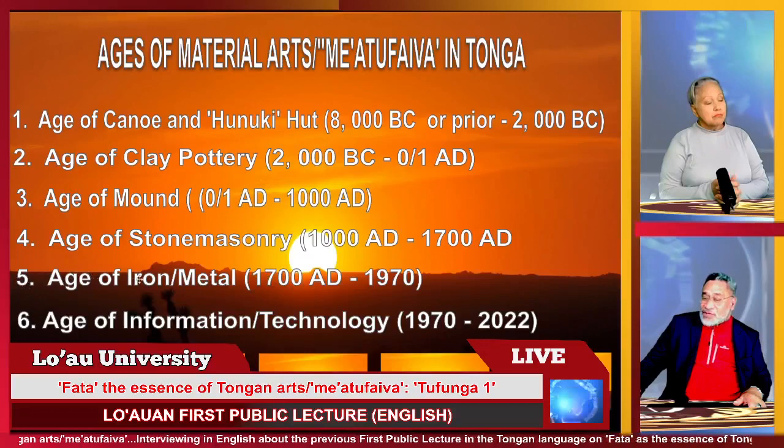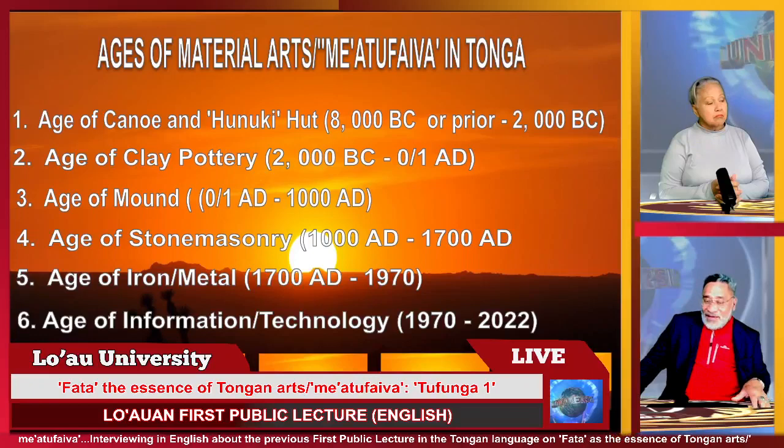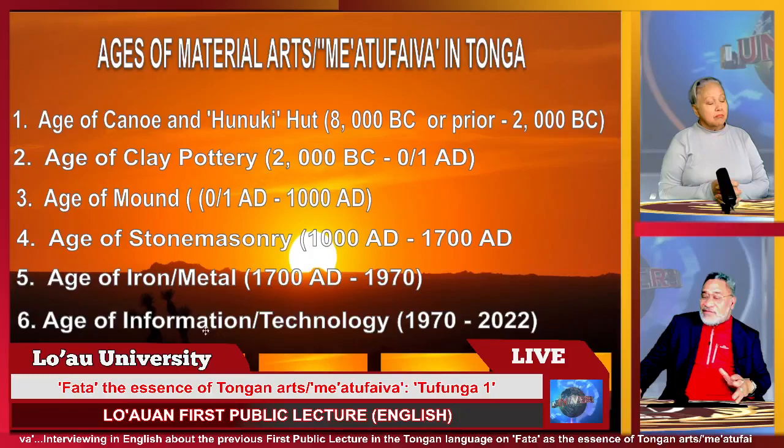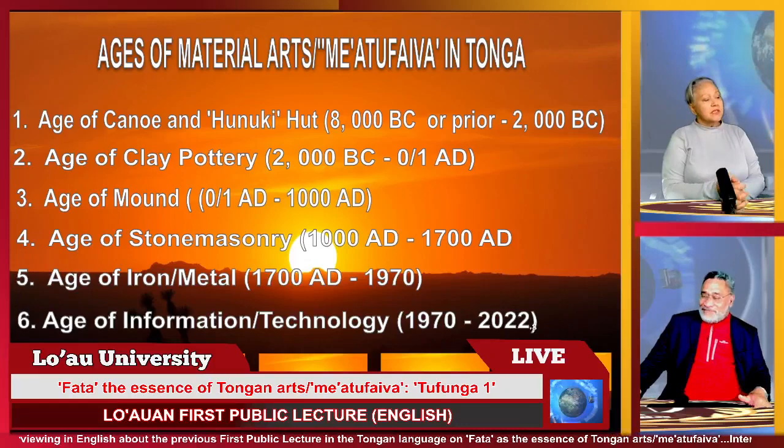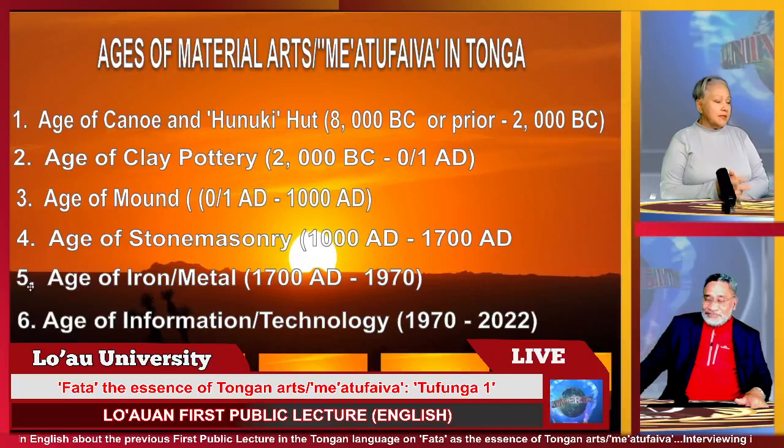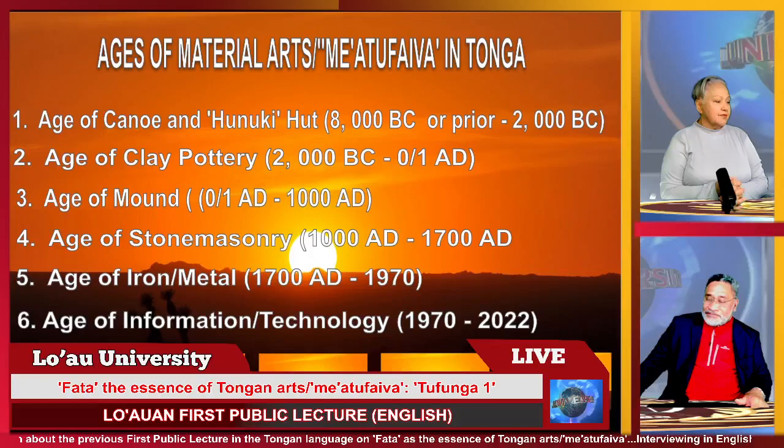Number five is the Age of Iron Metal when Europeans arrived, until 1970. Number six is the Age of Information and Technology from 1970 until now. The Age of Iron and Metal is still ongoing, just like the Age of Information Technology from the 1970s — still ongoing, as we know.